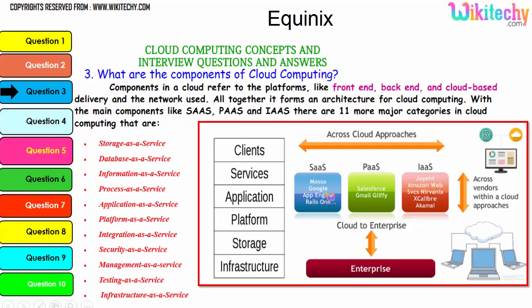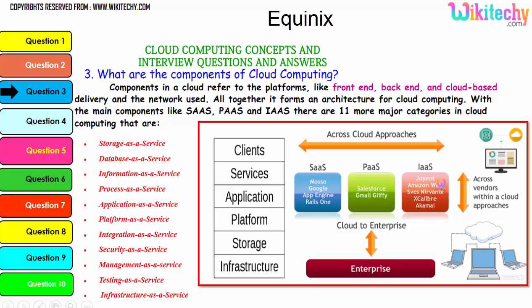For software as a service, examples are App Engine, Google, and Azure. For platform as a service, examples include Gmail, Glyphi, and Salesforce. For infrastructure as a service, you have Amazon Web Services, Akamai, Rackspace, and others.